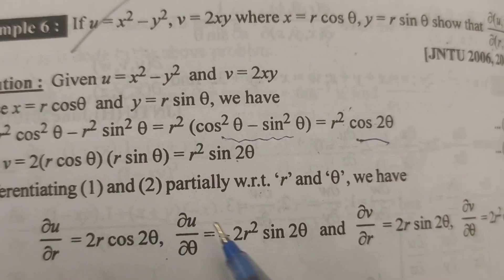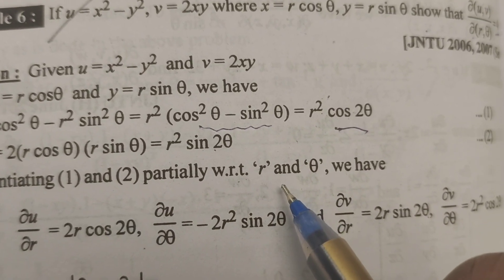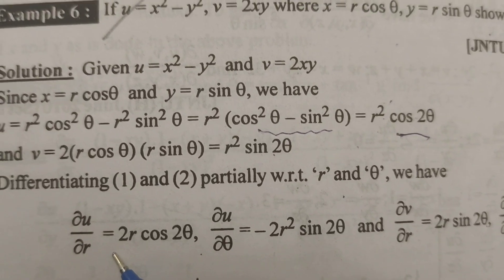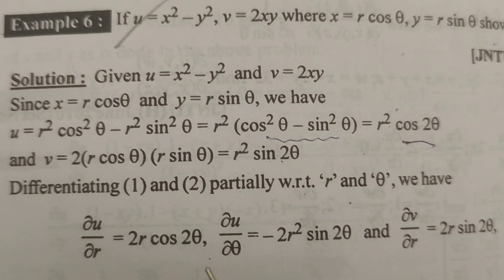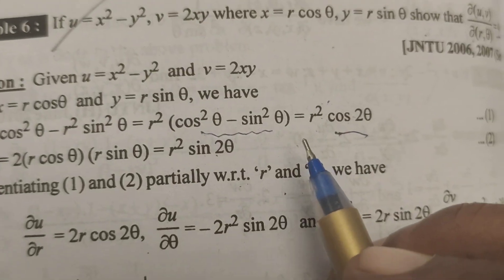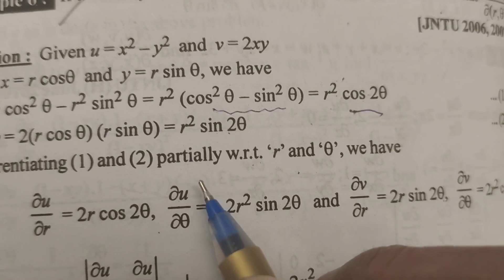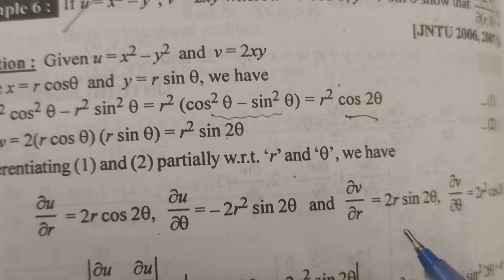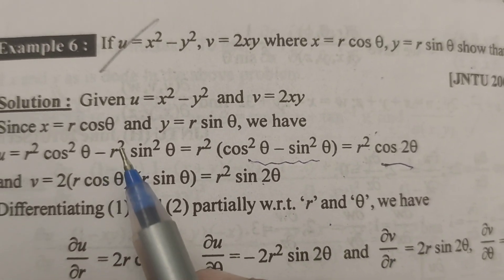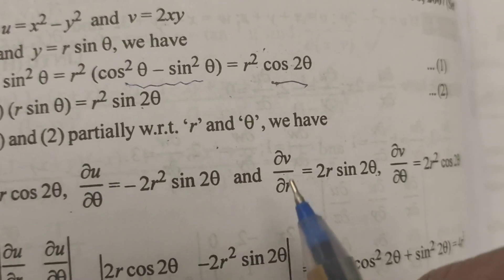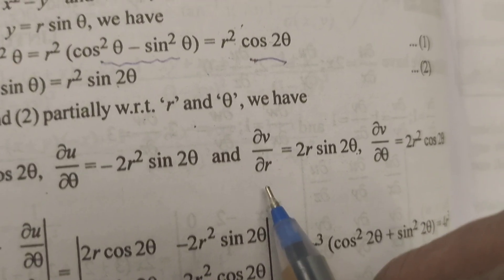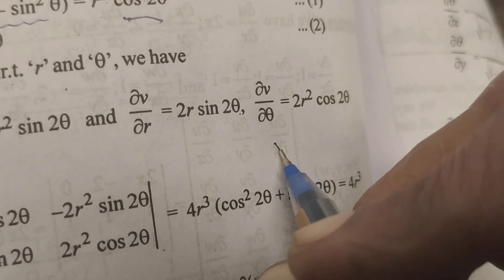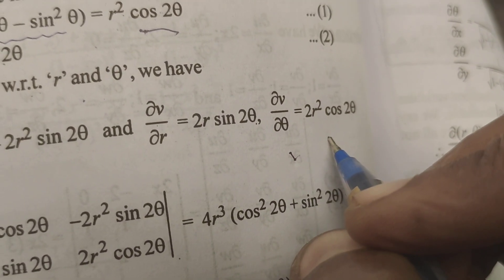Differentiating u and v partially with respect to r and θ: ∂u/∂r = 2r cos2θ, ∂u/∂θ = −2r² sin2θ. Similarly, ∂v/∂r = 2r sin2θ, and ∂v/∂θ = 2r² cos2θ.